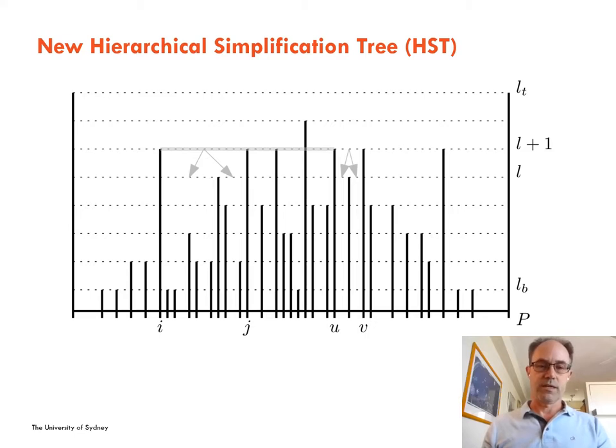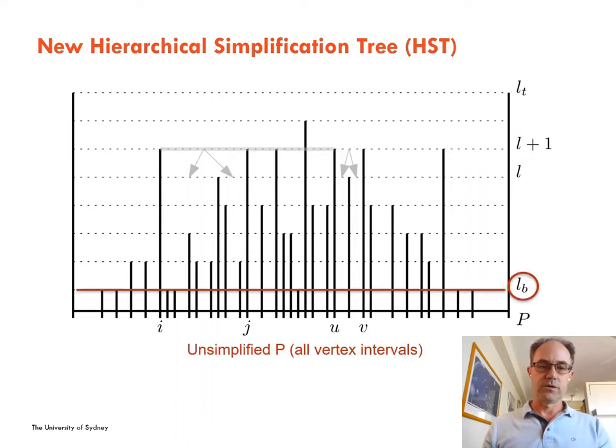The root has a large simplification error and a single interval that represents the entire trajectory P, and errors are halved from one tree level down to the next, resulting in more and more intervals as you descend down the tree. Leaf nodes store unsimplified P-vertex intervals.